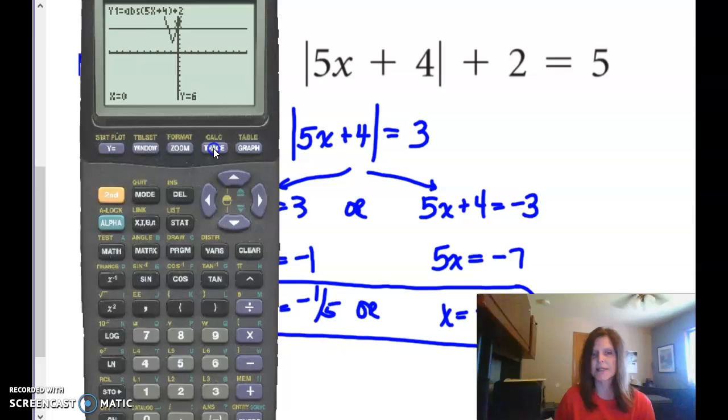I'm going to hit trace and put in what I think the answer is, negative 1 fifth, and I can see. Can you see where it's blinking? It's blinking right there where those two intersect. So that helps me understand that that is going to be the answer. It's y equals 5. That's on the other line.